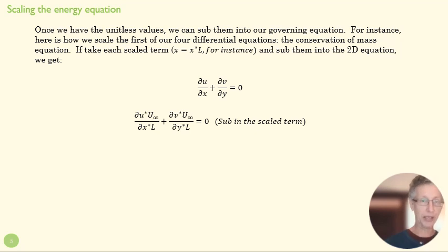So the first step is sub in those scaled values. For X, I'm putting in X star L here. For Y, I'm putting in Y star times L. For U, I'm putting in U star times U infinity.